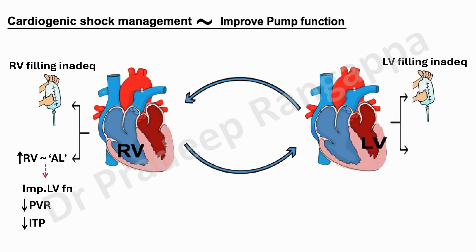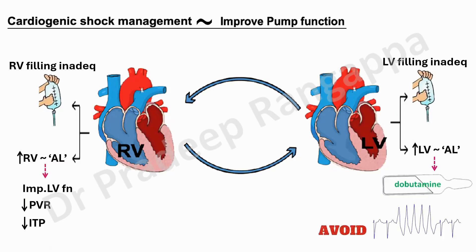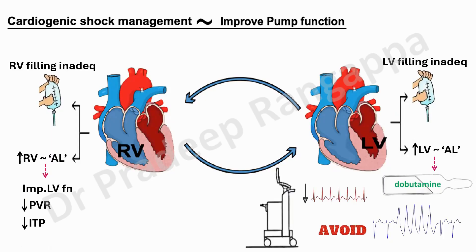For LV: if filling pressures are low, give small aliquots of fluid. If LV afterload is increased, consider dobutamine. Treat any arrhythmias aggressively — prevent supraventricular or ventricular arrhythmias, which worsen both RV and LV failure. Always consider reducing tachycardia with beta blockers. In extreme situations, use an intra-aortic balloon pump to support LV. If all measures are inadequate, move to mechanical circulatory support — an algorithm for that will be covered in the next snippet.